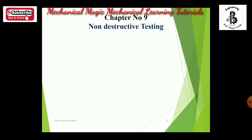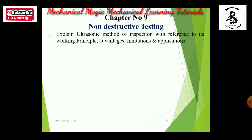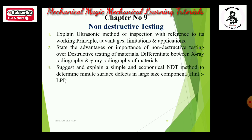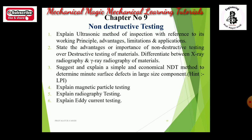Chapter 9 is non-destructive testing (NDT). Important questions: explain ultrasonic testing (UT) with reference to working principle, advantages, limitations, and applications for 7 marks. State advantages and importance of NDT over destructive testing, and differentiate between X-ray radiography and gamma-ray radiography for 7 marks. Suggest and explain a simple economical NDT method to determine minute surface defects in large components — that is dye penetration test or liquid penetrant inspection for 7 marks. Explain magnetic particle testing for 7 marks. Explain radiography for 7 marks. Explain eddy current testing for 7 marks. Minimum 7-mark theory from NDT.